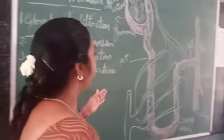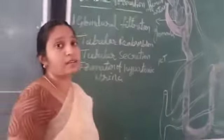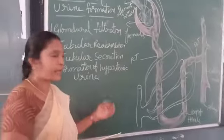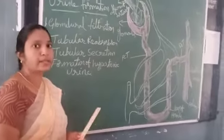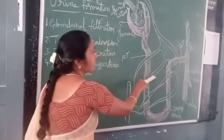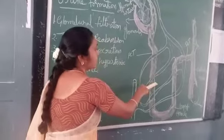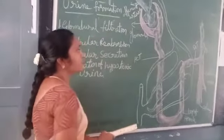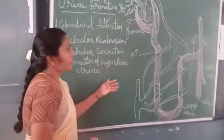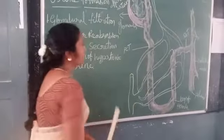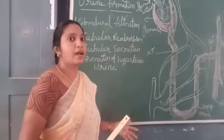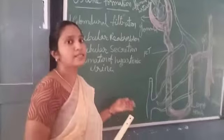So here some extra salts, sodium, potassium, chlorine, and hydrogen are secreted from peritubular network into distal convoluted tubule. Did you understand? Here the concentration of urine and pH of the urine is formed.